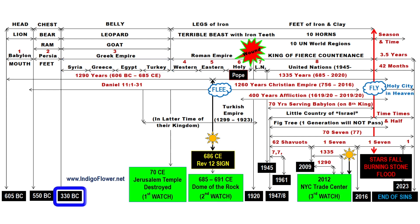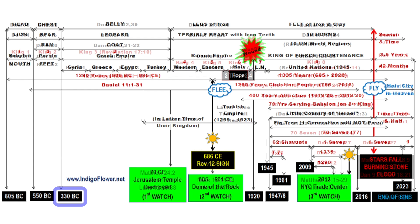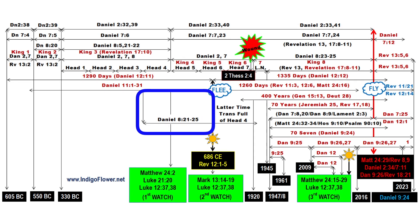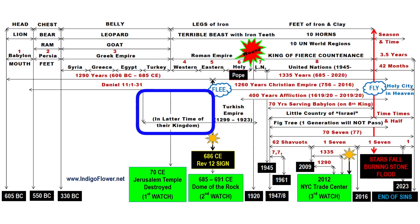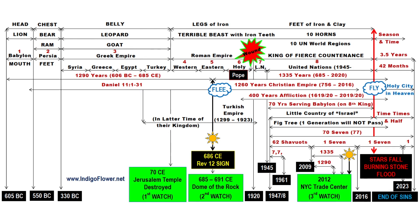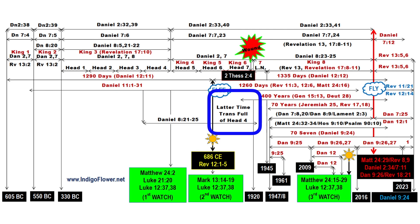The Greek Empire under Alexander the Great came into power from 336 to 330 BC. You will notice this section right here says "In Latter Time of Their Kingdom." That refers to Daniel 8 verses 21-25, which says that in the Latter Time of the Four Kingdoms, when the transgressors come to the full, a King of fierce countenance will rise up and by peace destroy many. The latter time of those four kingdoms occurred at the end of the Turkish Empire, which reigned from 1299 CE to 1923.